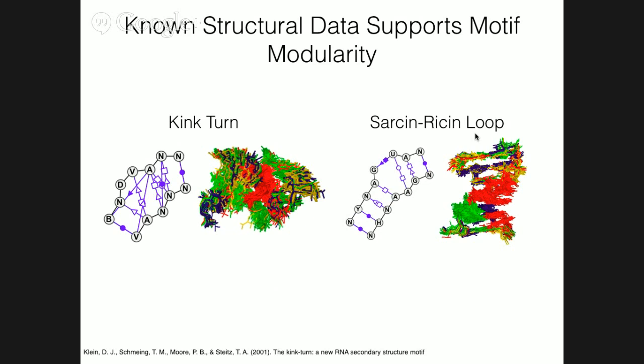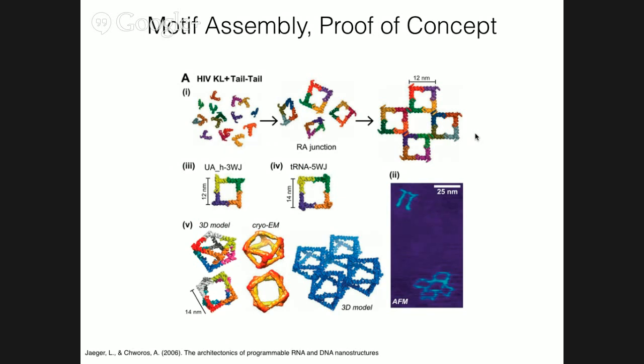There are definitely some motifs that, given a secondary structure, always yield the same 3D structure. So if a large number of motifs follow this principle, then solving design challenges should be as easy as connecting motifs together, like Lego blocks. We call this motif assembly, and a proof of concept of this has already been developed by Luke Yeager and colleagues, who have demonstrated that this is indeed possible with some motifs.